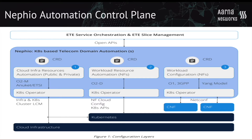This slide shows the Nafio control plane at a high level. The Nafio control plane consists of Kubernetes operators — there will be operators for the deployment and management of workloads, and different operators for performing day-N configurations. For example, there could be a Kubernetes operator which can perform 3GPP-compliant O1 configurations to the target network functions.